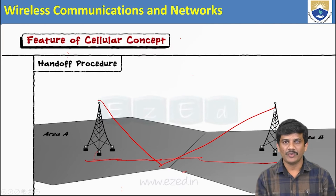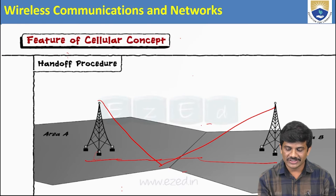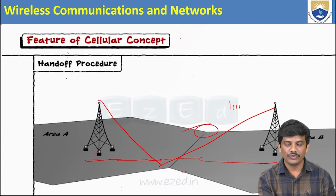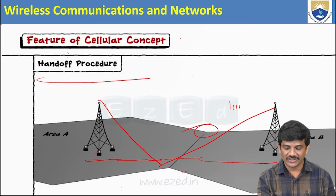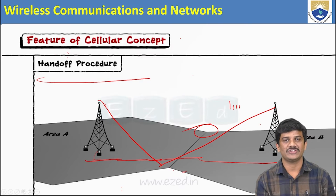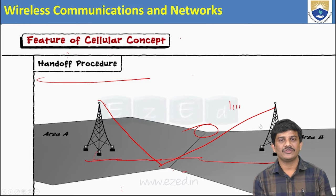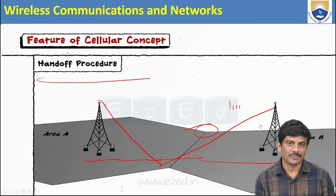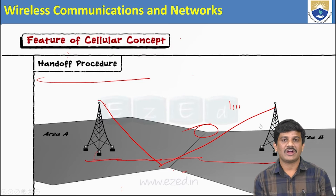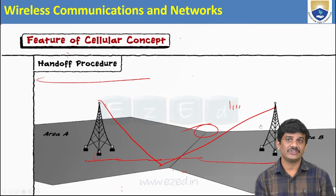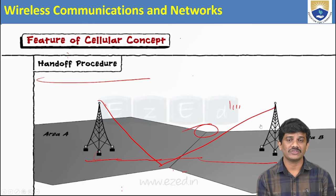Without the handoff procedure, whenever you reach the border area, the signal will drop. With the handoff procedure, the signal is handed over to the new base station, so there is no signal loss — the connection automatically continues from area A to area B with no signal drop. That is why we use the handoff procedure. This technology in wireless communication networks will be discussed in more detail in the next session.